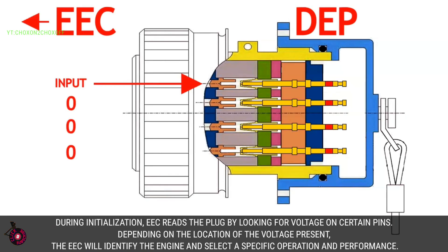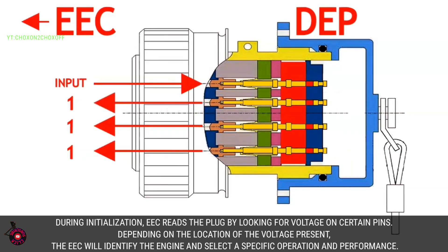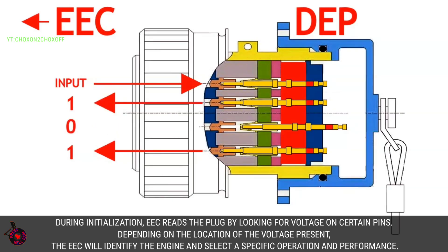During initialization, the EEC reads the plug by looking for voltage on certain pins. Depending on the location of the voltage present, the EEC will identify the engine and select a specific operation and performance.